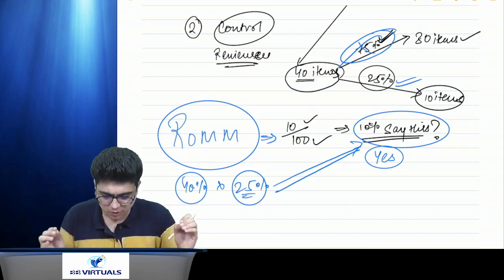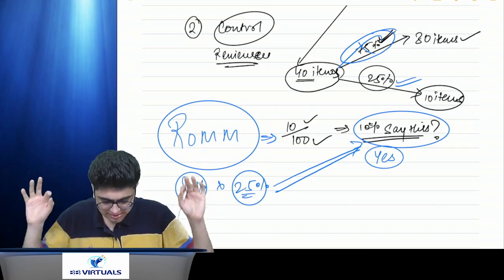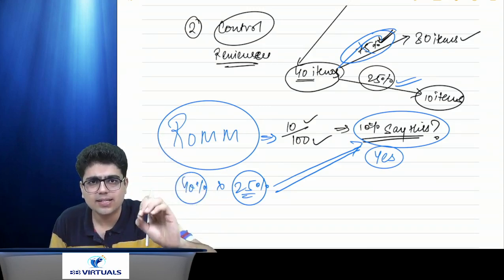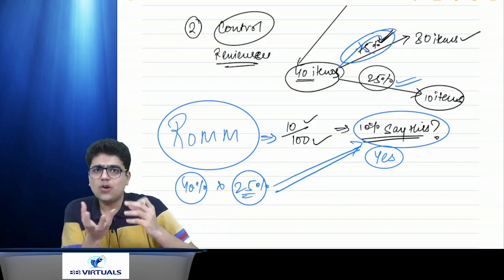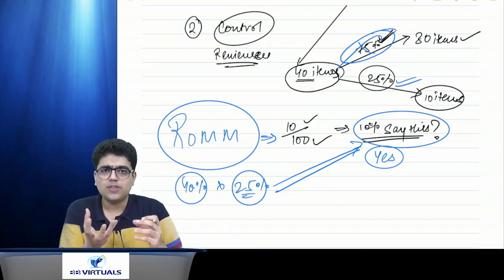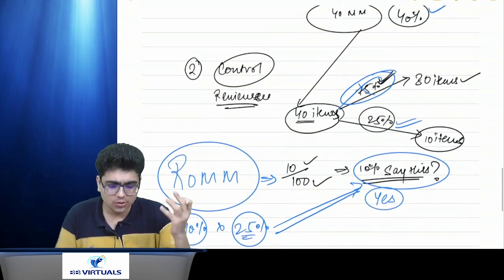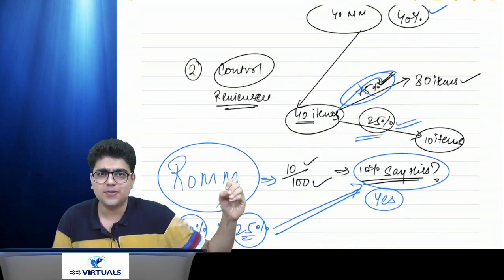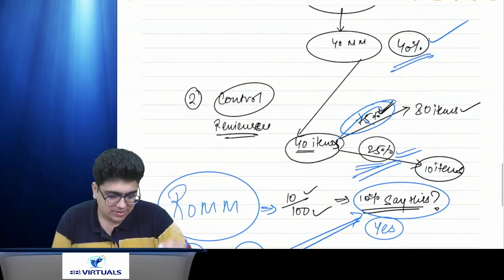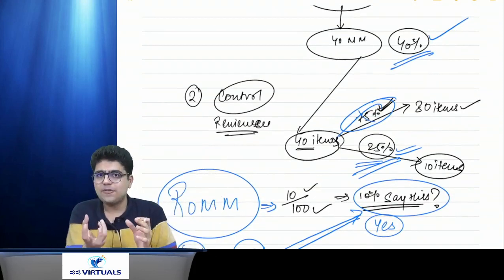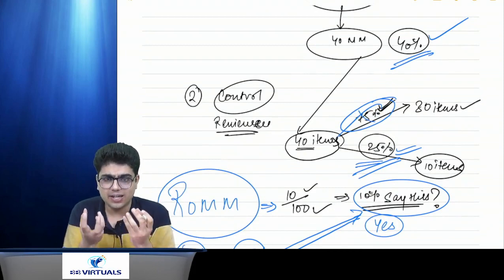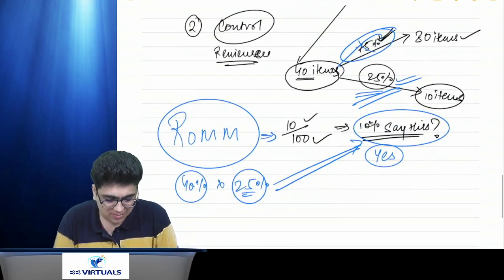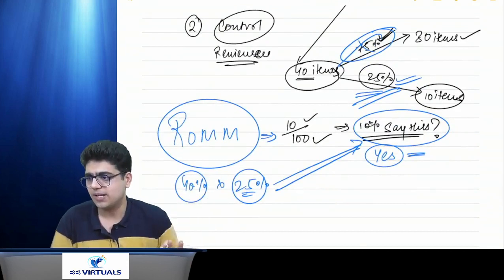The concept of risk of material misstatement is clear. Inherent risk is there. Out of that risk, what the controls are not able to prevent, detect, or correct — 25% failure rate — gives us the product: 40% times 25% equals 10% risk of material misstatement.